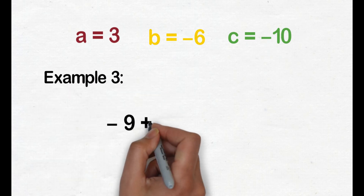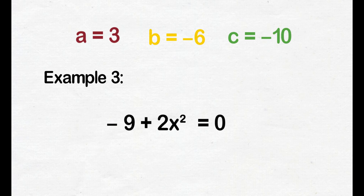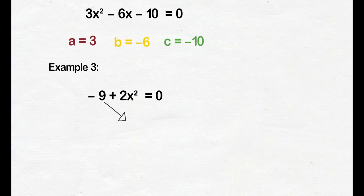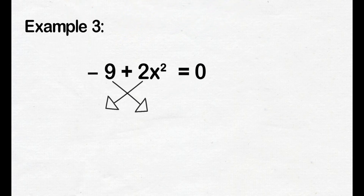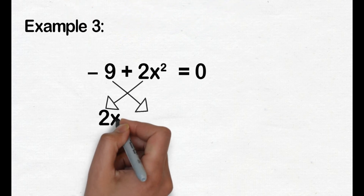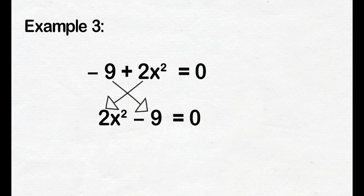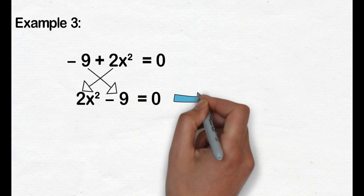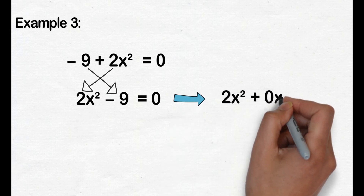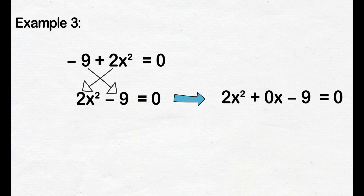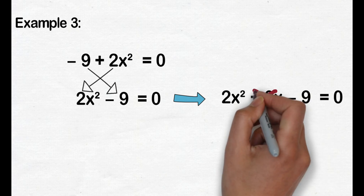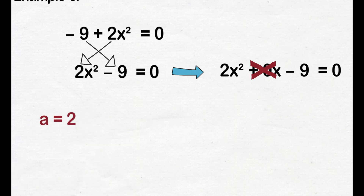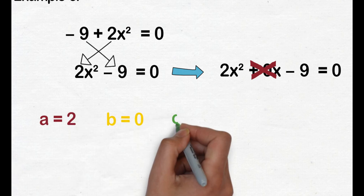Example number 3: negative 9 plus 2x squared equals 0. This is a quadratic equation but not written in standard form. We will switch the positions of negative 9 and 2x squared. The equation becomes 2x squared minus 9 equals 0, which is already in standard form. Notice that there is no linear term. We can rewrite it as 2x squared plus 0x minus 9 equals 0 — there is no linear term because the value of b is 0. The value of a is 2, b is 0, and c is negative 9.